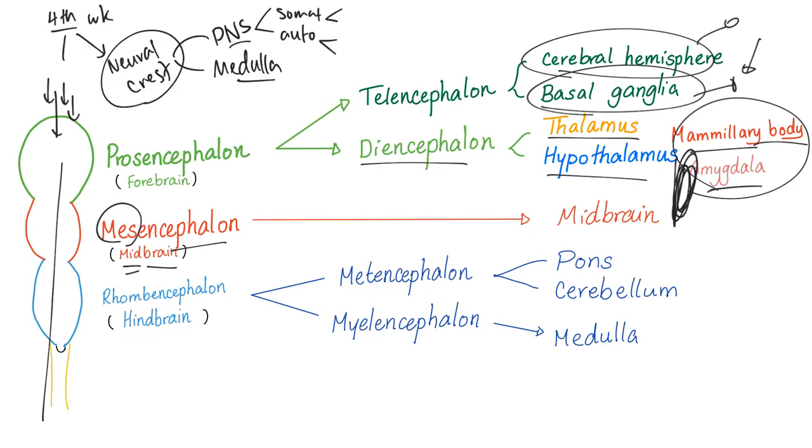Next, we have the rhombencephalon, or hindbrain. Two types, metencephalon and then myelencephalon. The metencephalon will give us the pons and the cerebellum, and the myelencephalon will give us the medulla.